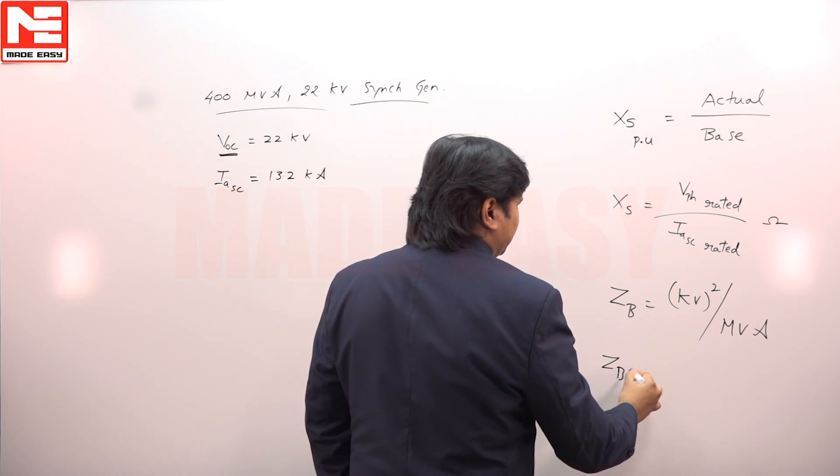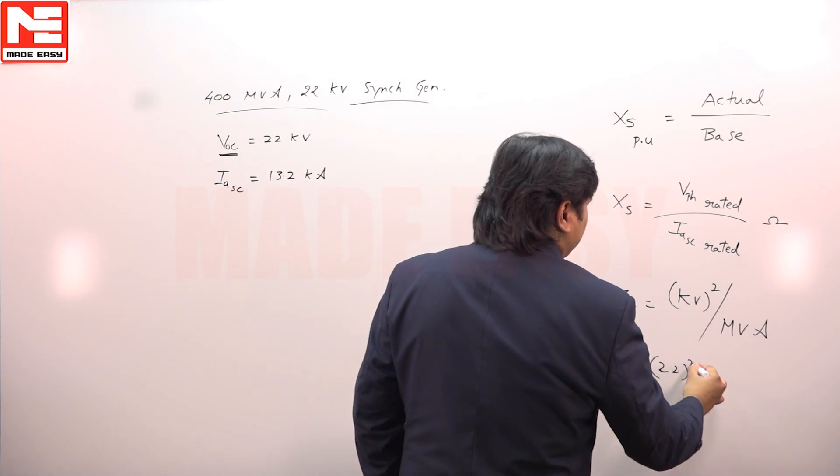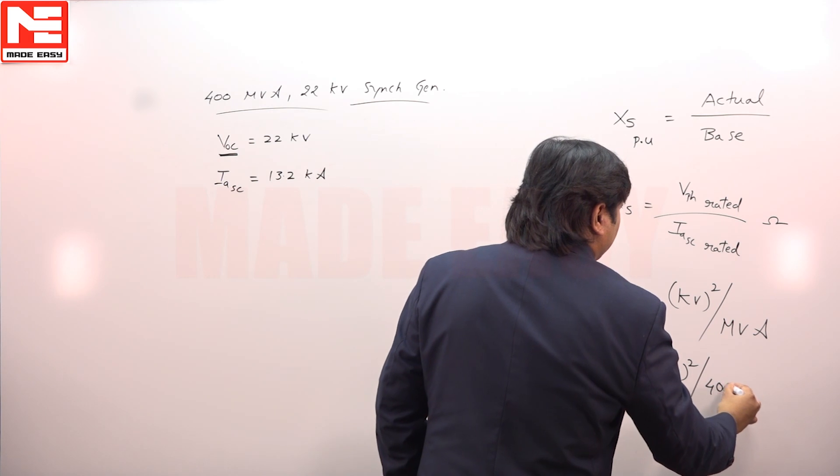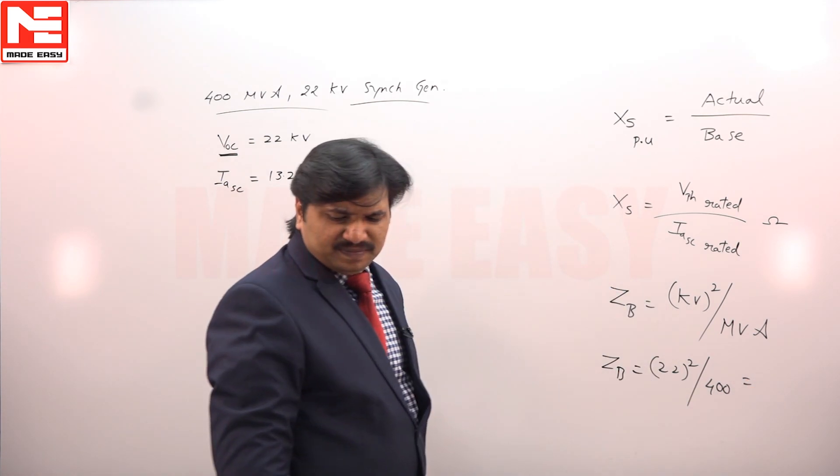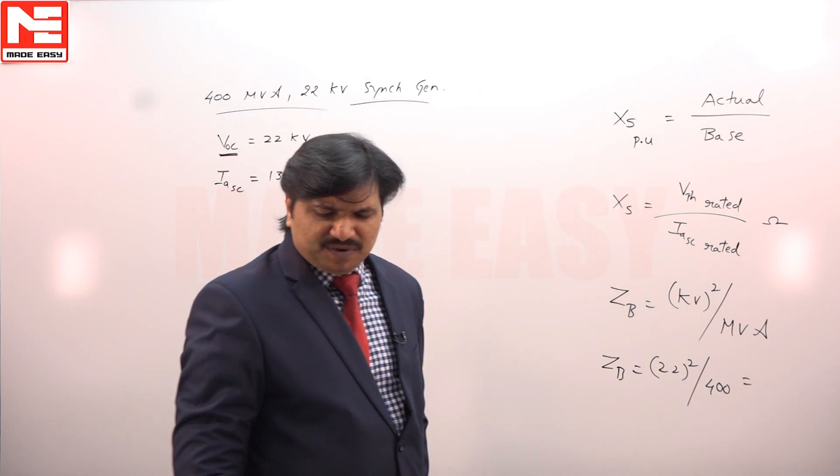So what is that base value? 22 square by 400, that is 1.21 ohms.